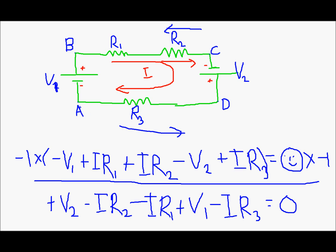Most books use the potential rise convention. So if you are travelling from A to B and you see the positive plate later, it indicates a rising potential and they write it as plus V1. But this convention — the potential drop convention — is far simpler. You just write what you see first: if you see the negative plate first, write minus V1. And you must follow it with each and every element. If you are travelling in the direction of current and find a resistance, write plus IR1. If you are travelling against the direction of current, write minus IR1.